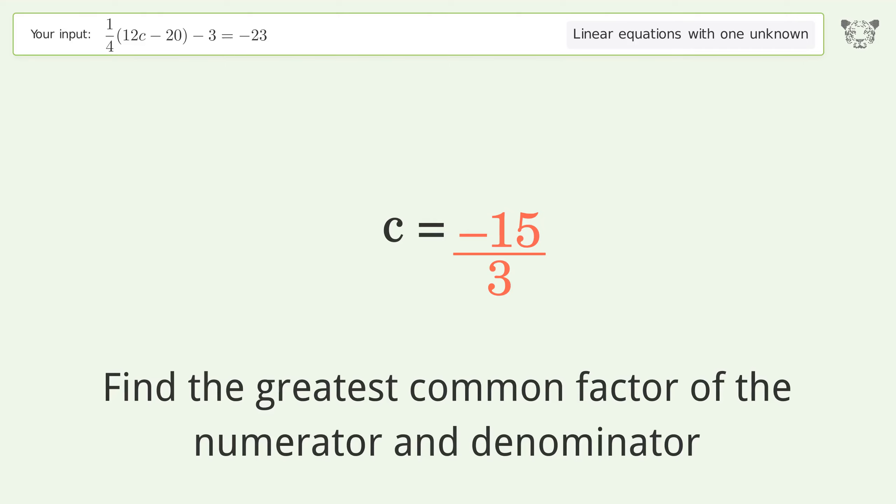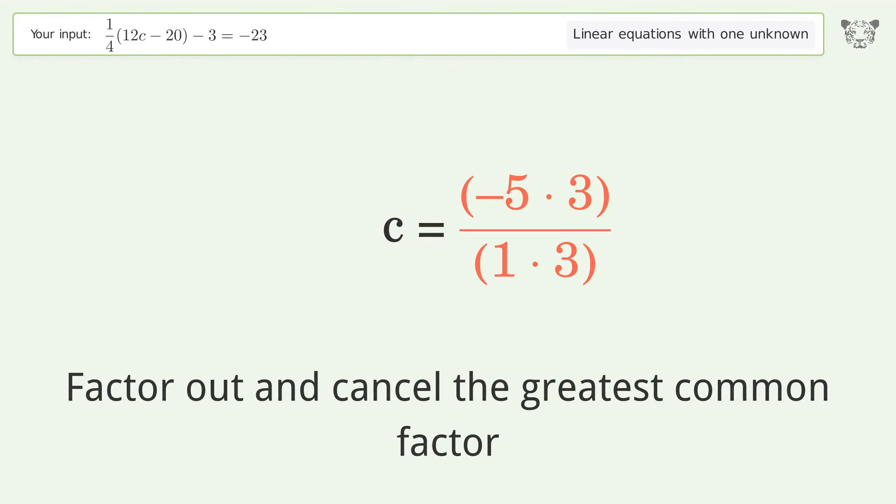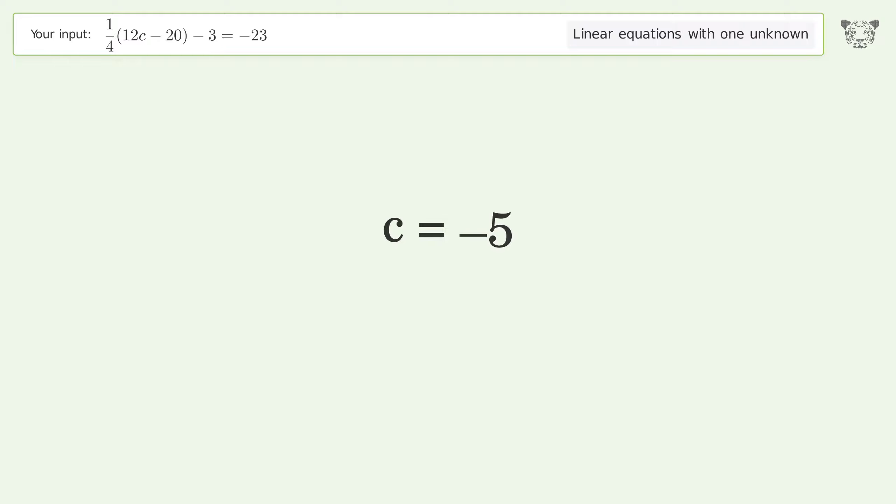Find the greatest common factor of the numerator and denominator. Factor out and cancel the greatest common factor. And so the final result is c equals negative 5.